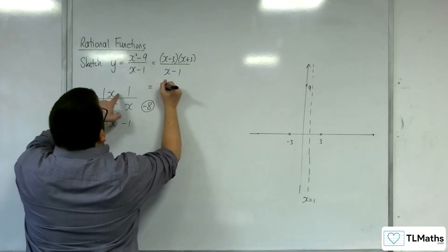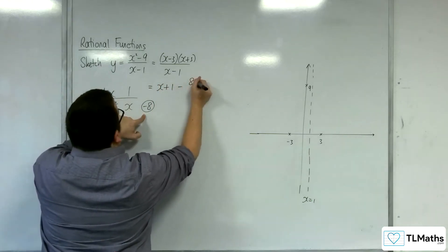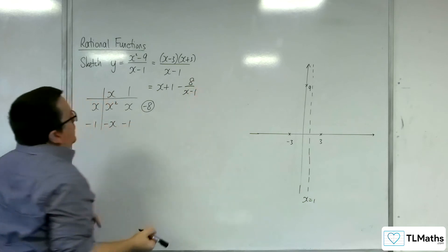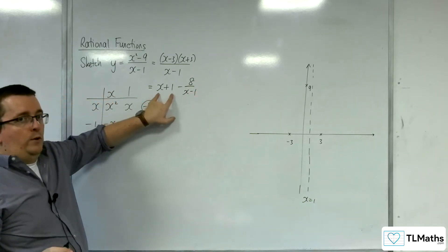And so this is equal to x plus 1, take away 8 over x take away 1. So the oblique asymptote is at y equals x plus 1.